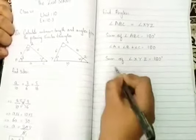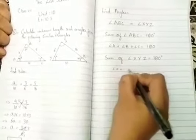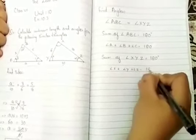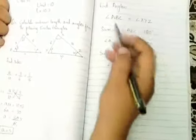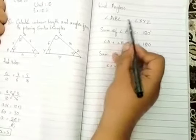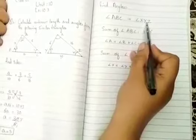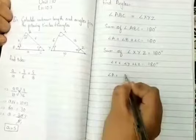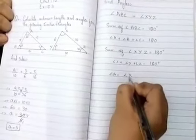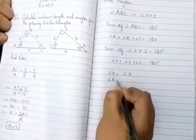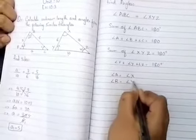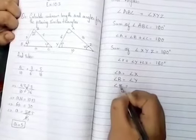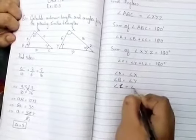Similarly, the sum of angles of triangle XYZ is equal to 180 degrees, which means that angle X plus angle Y plus angle Z is equal to 180 degrees. Now, we know that triangle ABC is equal to triangle XYZ, which means angle A is equal to angle X, angle B is equal to angle Y, and angle C is equal to angle Z.